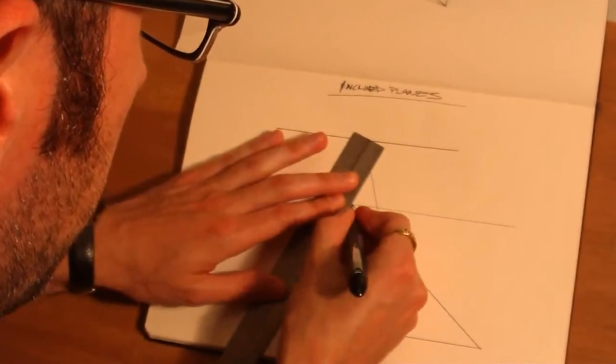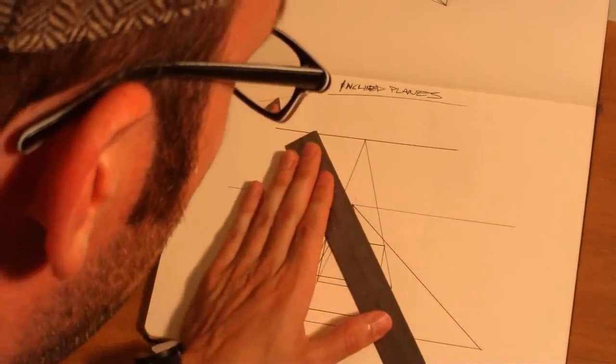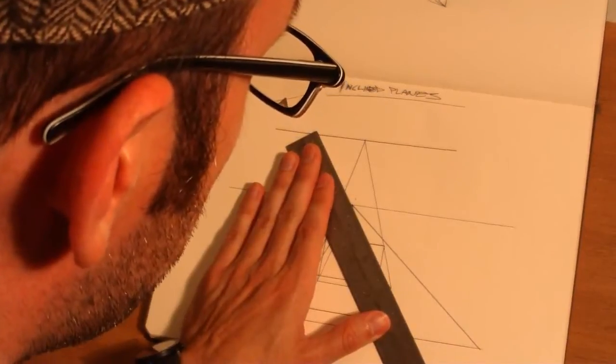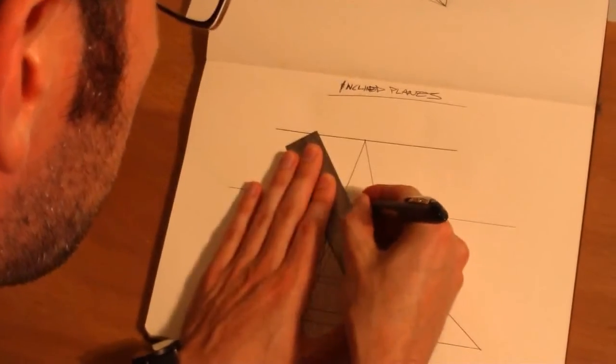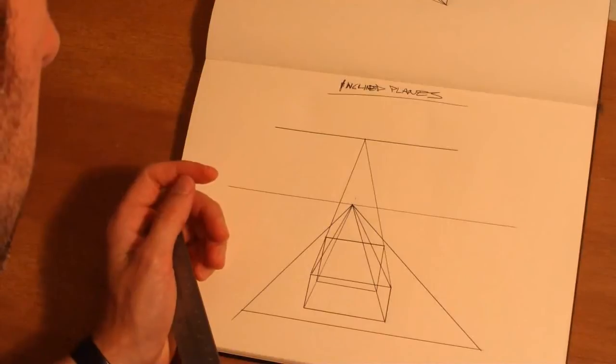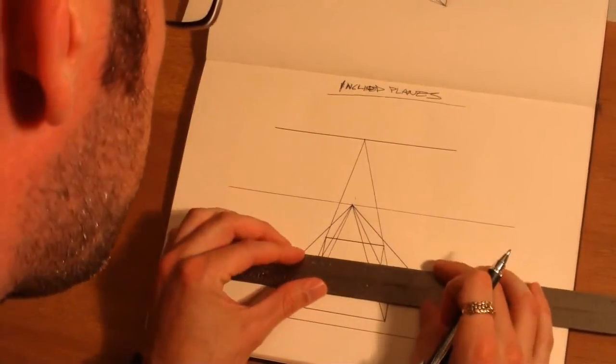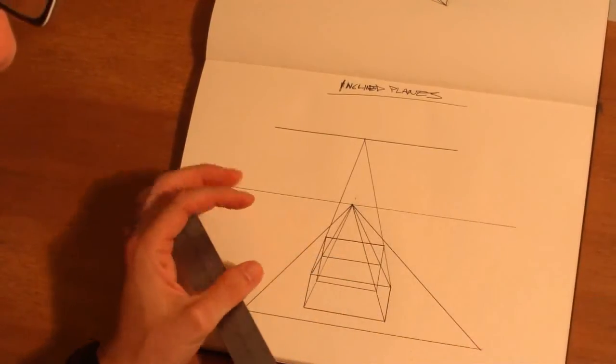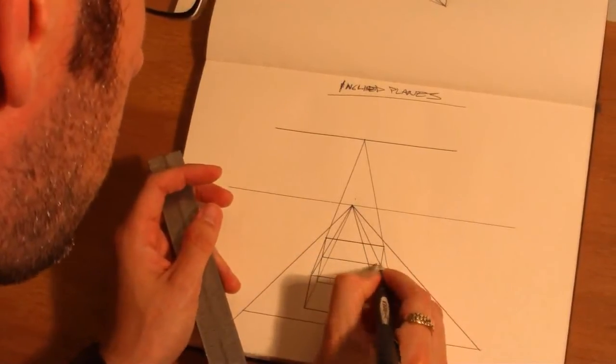So we're going to take our planes back to our first horizon line, first vanishing point. And then we have our little intersecting lines right here.